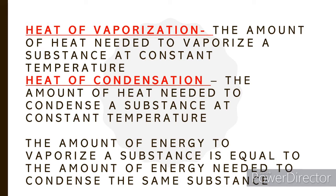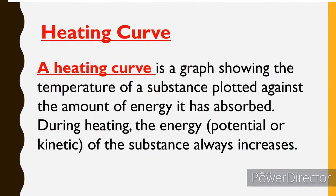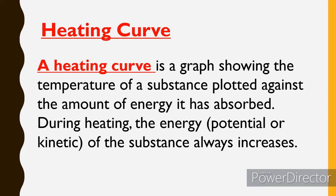Heat of vaporization is the amount of heat needed to vaporize a substance at a constant temperature — liquid to gas. Heat of condensation is the amount of heat needed to condense a substance at constant temperature — gas to liquid. The same relationship holds: the amount of energy to vaporize a substance equals the amount of energy needed to condense the same substance.